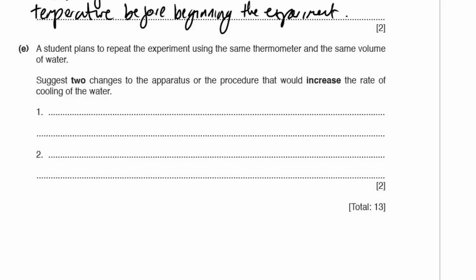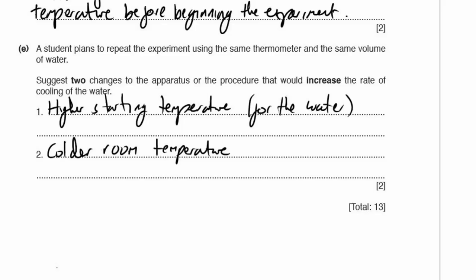Part E. A student plans to repeat the experiment using the same thermometer and same volume of water. Suggest two changes to the apparatus or procedure that would increase the rate of cooling of the water. A bigger temperature difference would work, so a higher starting temperature, or a colder room temperature. They would both work. Other things you could do: use a metal beaker, that would give off heat more rapidly; you could use a fan; something with a bigger surface area. Those things would help as well.